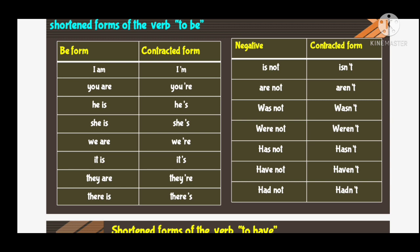Now we come to the next table: the negative contracted forms. 'Is not' — the short form is 'isn't', i-s apostrophe-t. 'Are not' — the short form is 'aren't'. 'Was not' — contracted form is 'wasn't'. 'Were not' — short form is 'weren't'. 'Has not' — short form is 'hasn't'. 'Have not' — short form is 'haven't'. 'Had not' — short form is 'hadn't'.